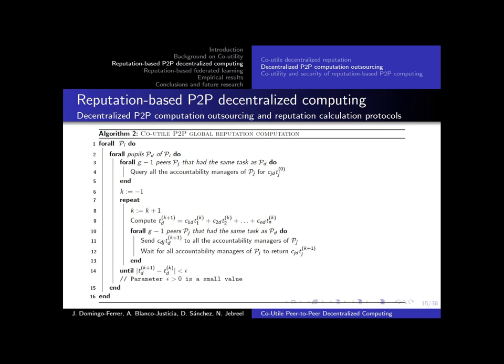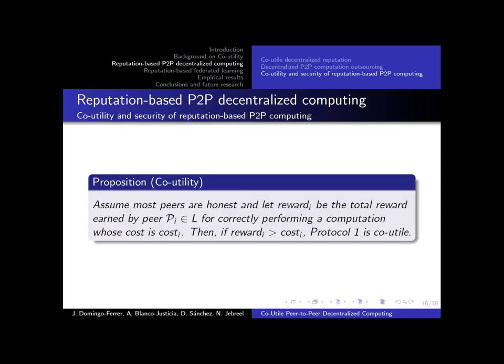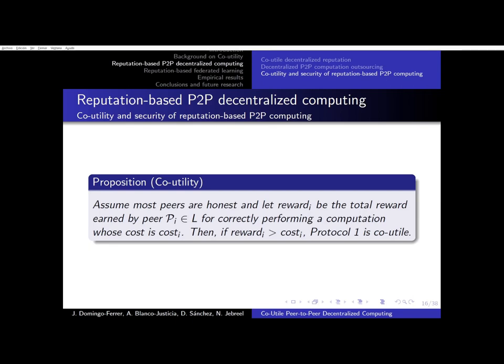The accountability managers iteratively compute a global reputation TD by aggregating the opinions of the other accountability managers weighted by the opinion on the accountability managers. These iterations are repeated until the global reputations converge. Regarding the co-utility of the protocol: if we assume most peers to be honest and let reward_i be the total reward earned by each peer for correctly performing a computation whose cost is cost, then if this reward is bigger than the cost, Protocol 1 is co-utile. The details can be found in the paper.